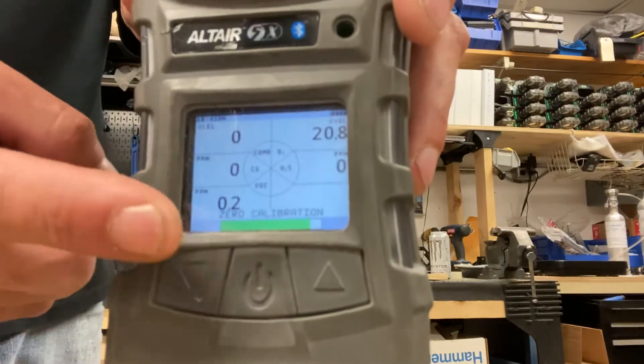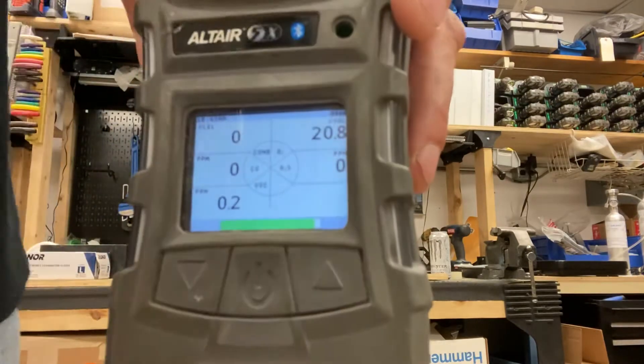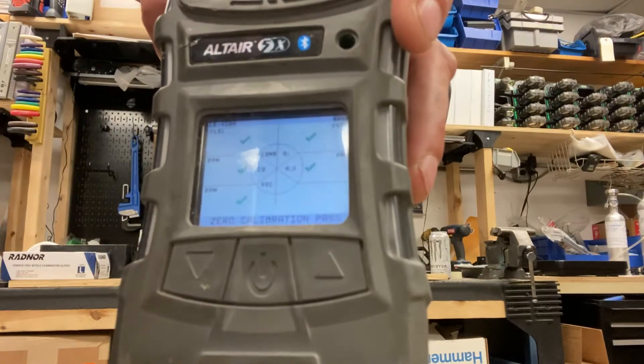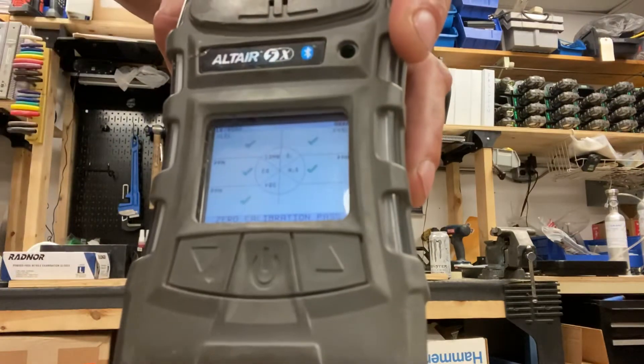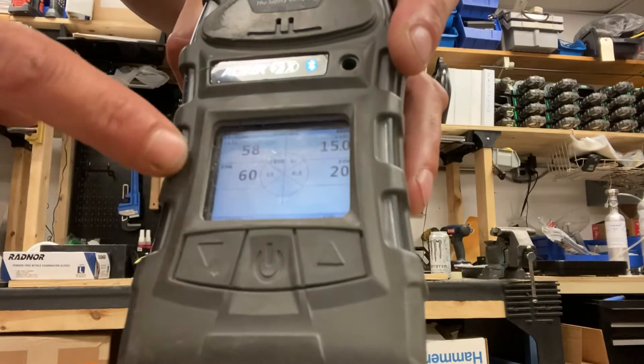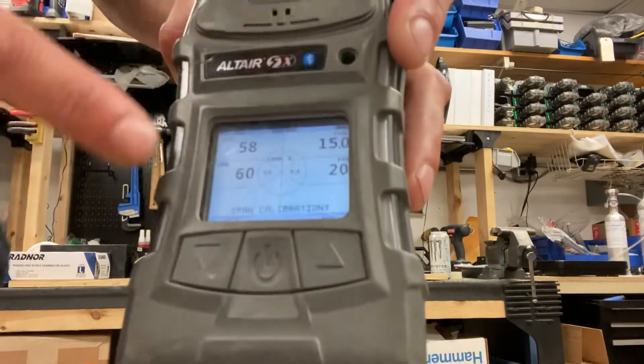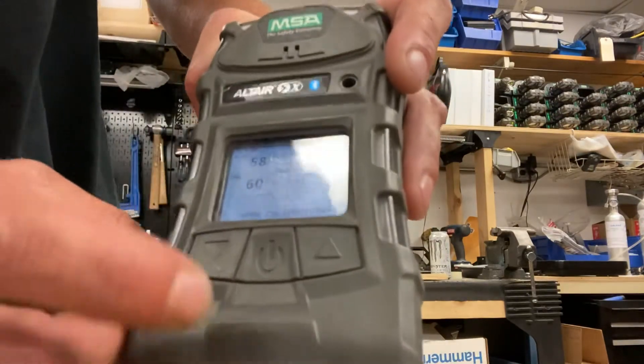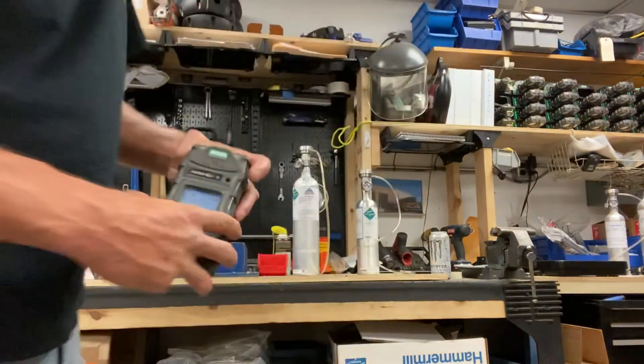Alright, so past its sensor refresh. There's a little bit of drift on the VOC down here but we'll get rid of that shortly. Perfect, so as you can see all check marks, passed its zero calibration. At this point it asks you if you want to span cal, and as you can see it has the four gases, which means it wants the four-gas, not the VOC. So here's where you're gonna hit yes.